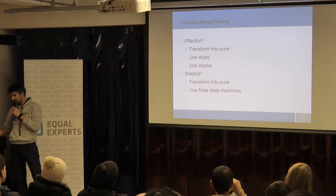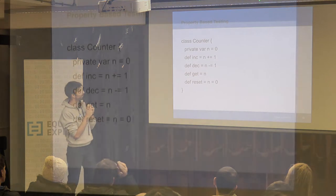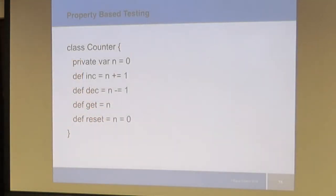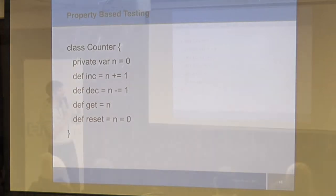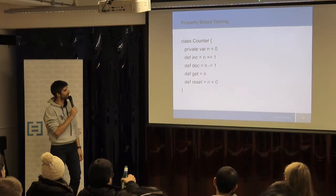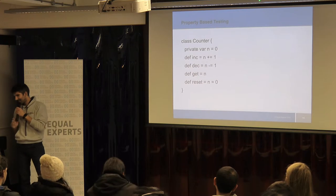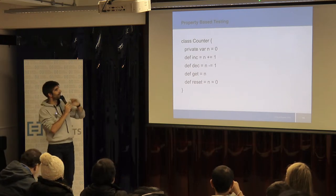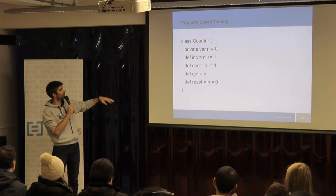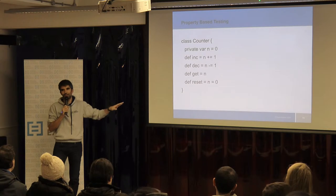The most interesting example, I think, is this: you guys can use this to test microservices. Microservices usually have inherent state — they have something in a database and you want to test these things via a REST API, for example. The example I have here is very simple, but you can take this example and use it to test REST APIs. Let's imagine we have a counter — that's all the state we have. It's this class, Counter. It starts with zero and then you have increment, decrement, get the value out of it, and reset it to zero. It holds this state in this private variable — imagine that would be a database.